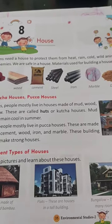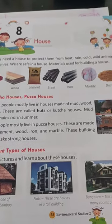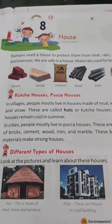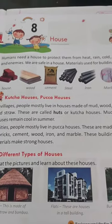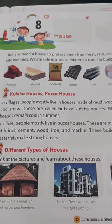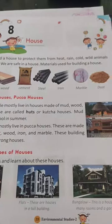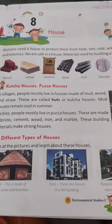Materials which are used for building a house are wood, cement, steel, iron, fuel and dust.